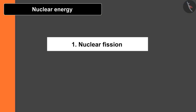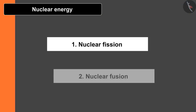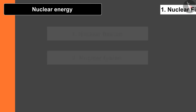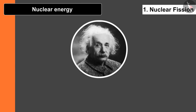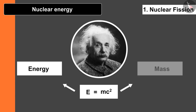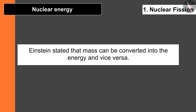To understand nuclear energy, let's first understand Einstein's equation E = mc². Einstein equated two equivalent quantities: energy and mass. He stated that mass can be converted into energy and vice versa.